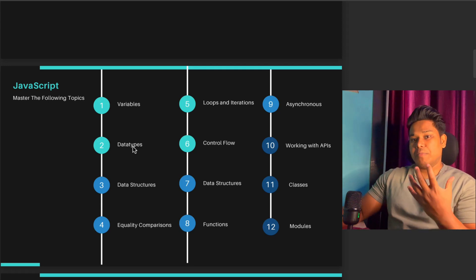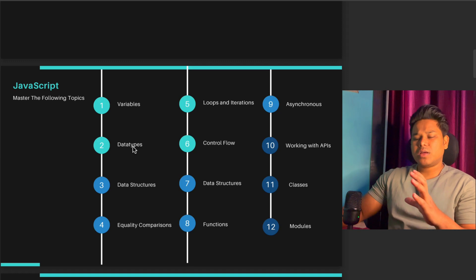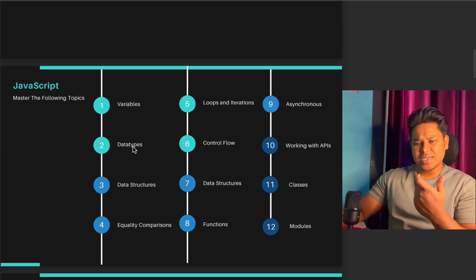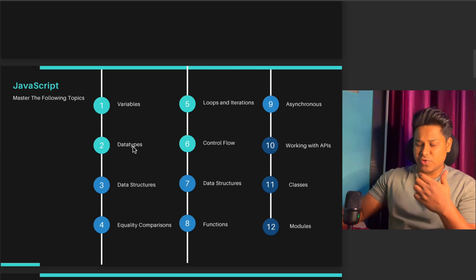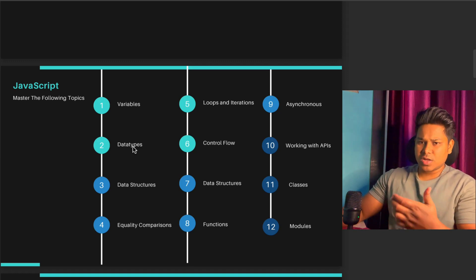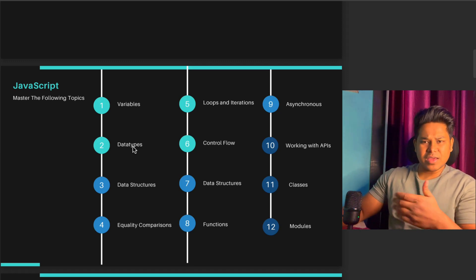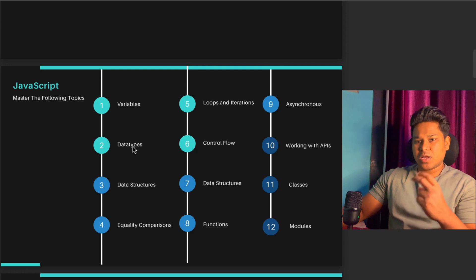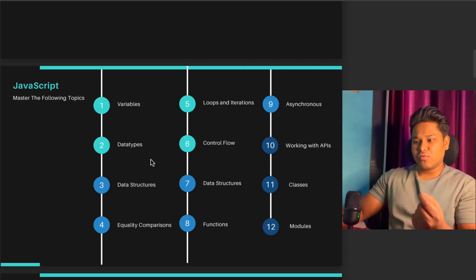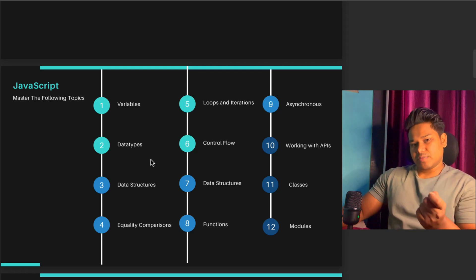After data types, you have to learn about data structures. You don't need to master them, but you have to have a basic understanding of how to design a basic data structure. When you make a request from your smart contract you'll get raw data, so you need to know how to structure that data efficiently to display it in your DApp.